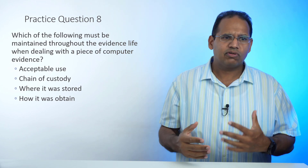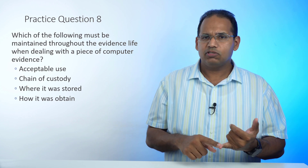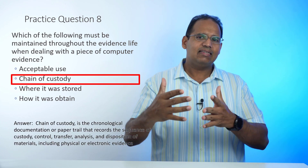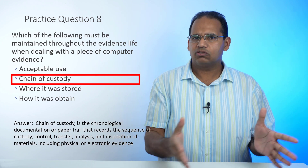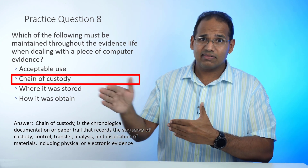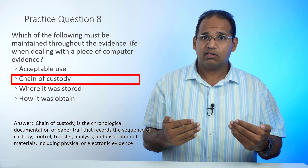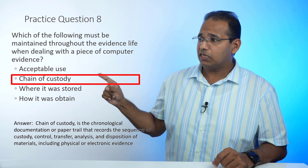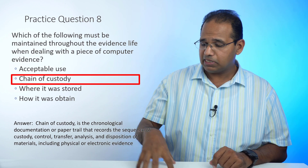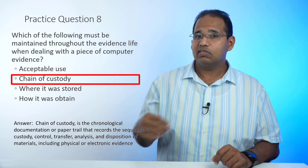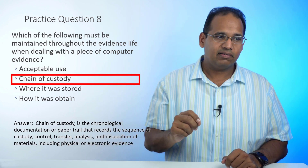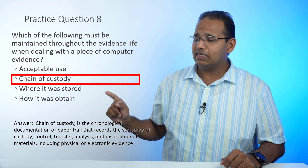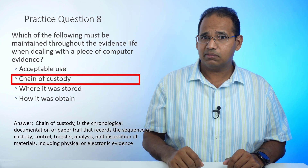Which of the following must be maintained throughout the evidence life cycle when dealing with computer evidence? The answer is chain of custody — covered in objective 4.0, operational procedures. The chain of custody is the life cycle of the evidence: how it was obtained, who obtained it, where it was stored, and who had access. This maintains the integrity of the evidence. Acceptable use is how we use a computer. Where it was stored and how it was obtained are parts of the chain of custody.